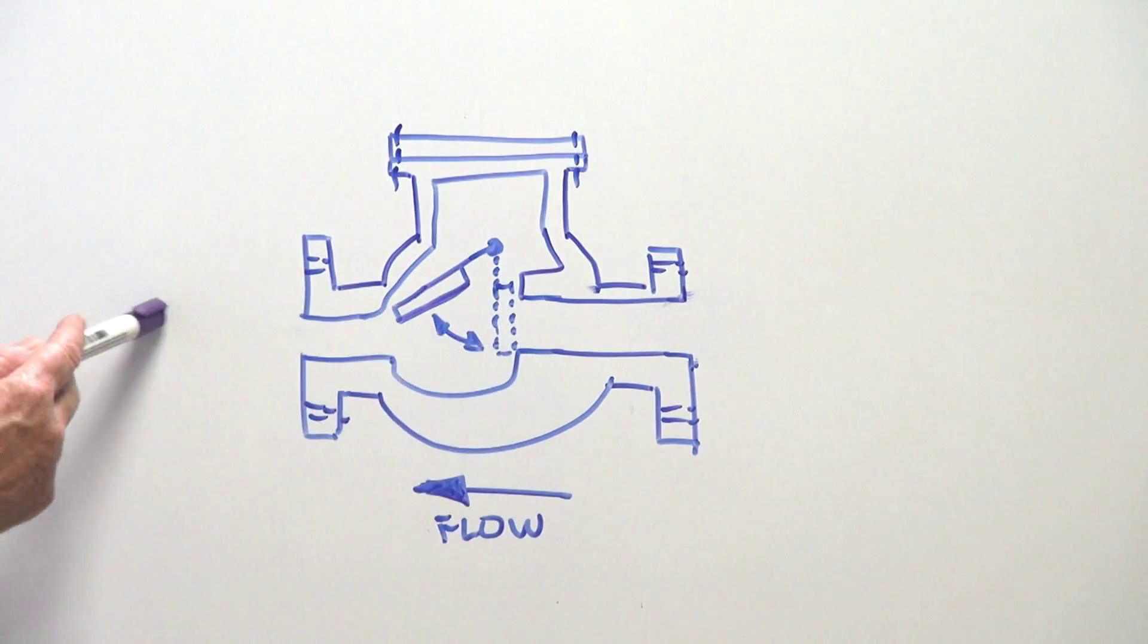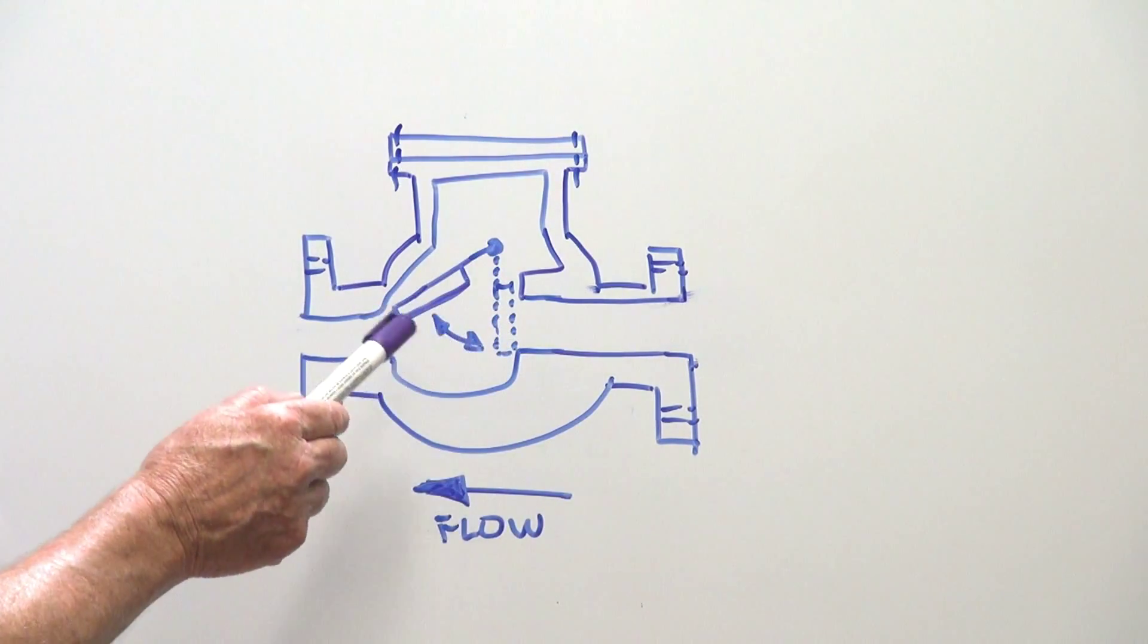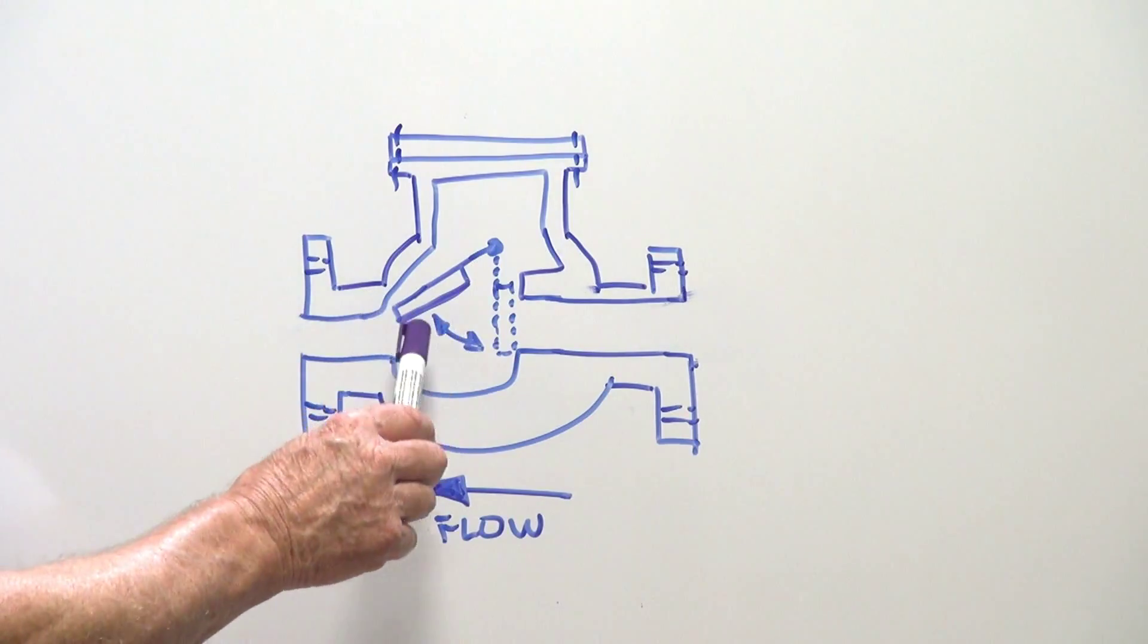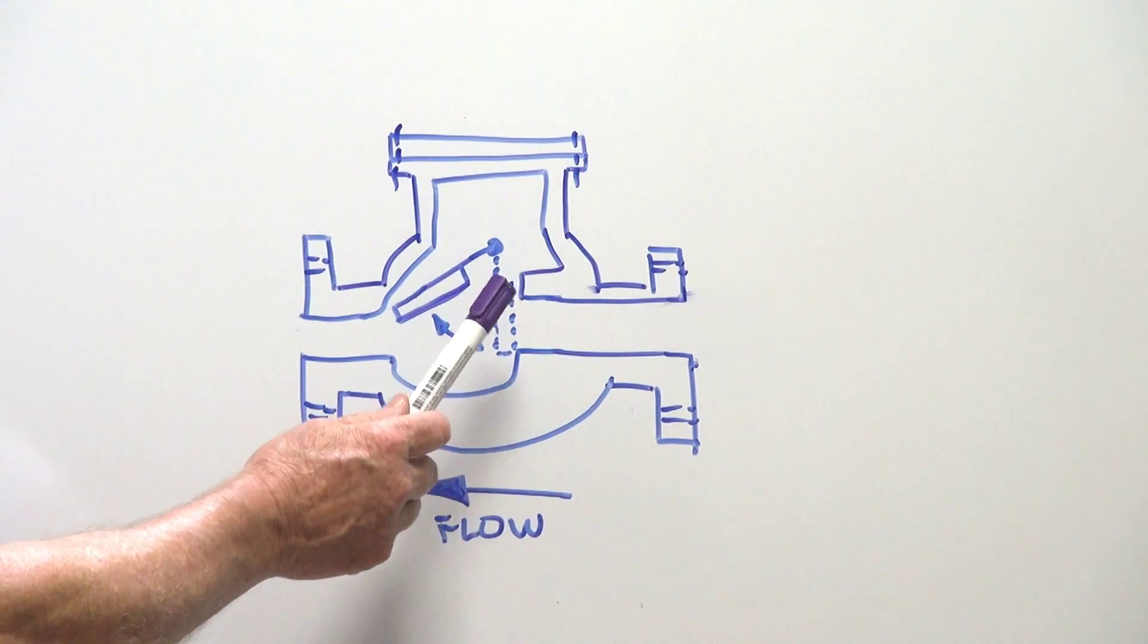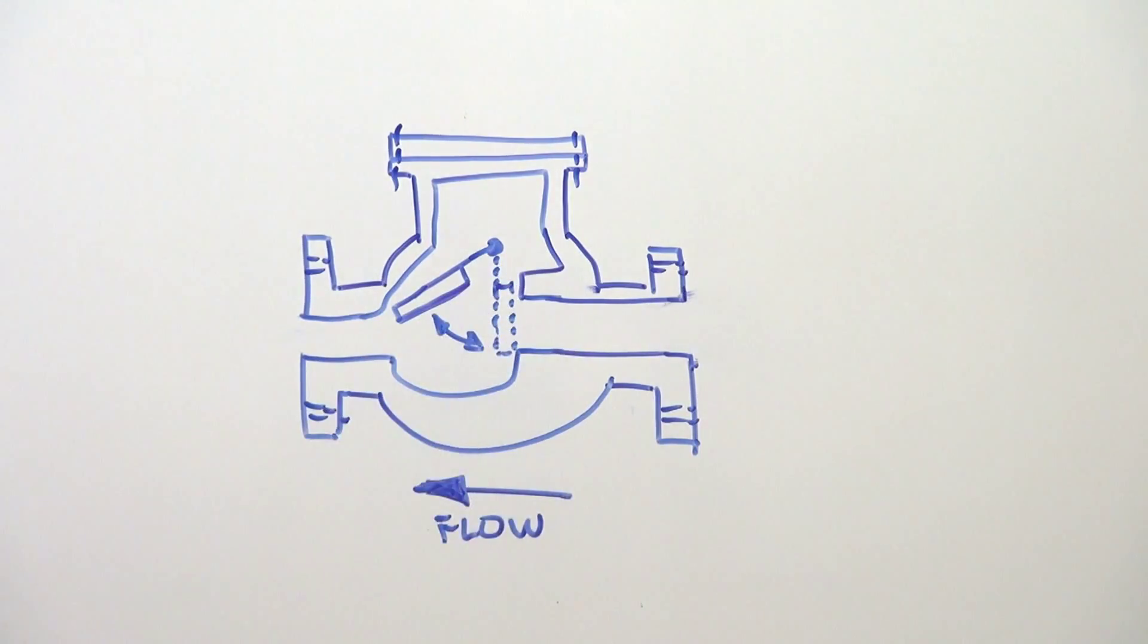The actual unit needs to be sitting in the horizontal, or if it's vertical it needs to have the direction of flow going up because the flap can then come down again with gravity assist.